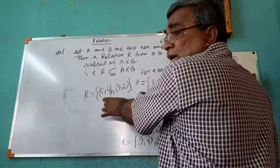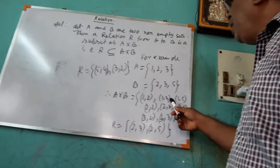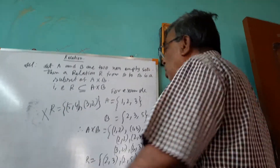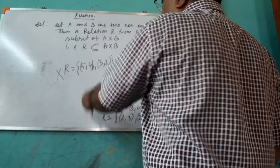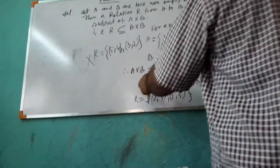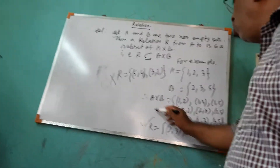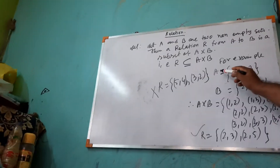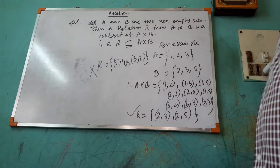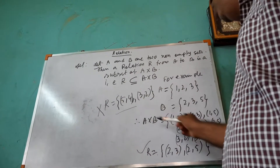Because in this relation, there is (5,4), but (5,4) is not contained in A cross B. So this is not a relation of these two sets A and B, because (5,4) is not in A cross B. That means this R cannot be written as a subset of A cross B, so this is not a relation. But the earlier R was a relation because all pairs were contained in A cross B — R is a subset of A cross B.